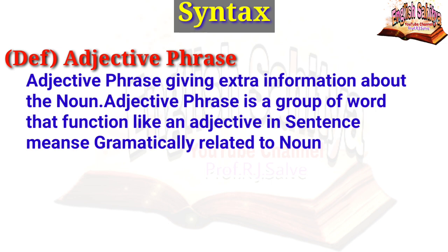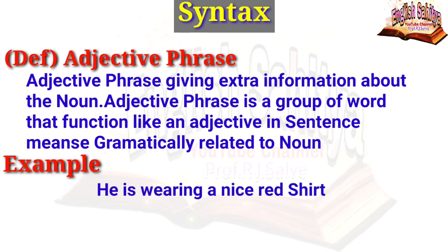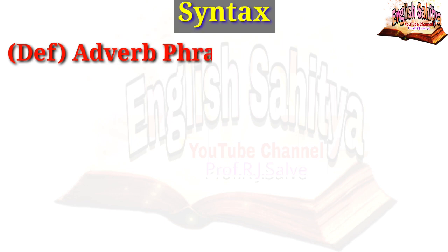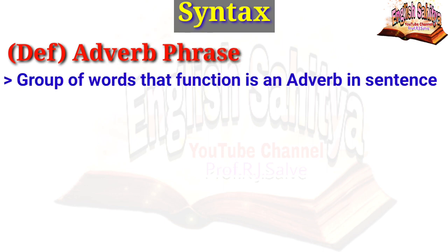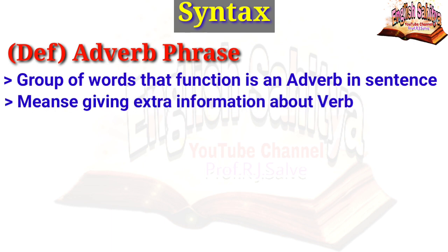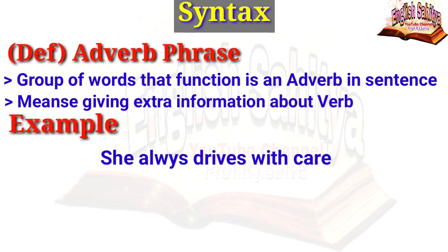Then the adjective phrase. An adjective phrase gives extra information about the noun. It is a group of words that function like an adjective in a sentence and are grammatically related to the noun. For example, 'he is wearing a nice red shirt' — 'nice red' is the adjective phrase and 'shirt' is the noun. Then the adverb phrase: an adverb phrase is a group of words that function as an adverb in the sentence, giving extra information about the verb. For example, 'she always drives with care' — 'drives' is the verb and 'with care' is the adverb phrase.